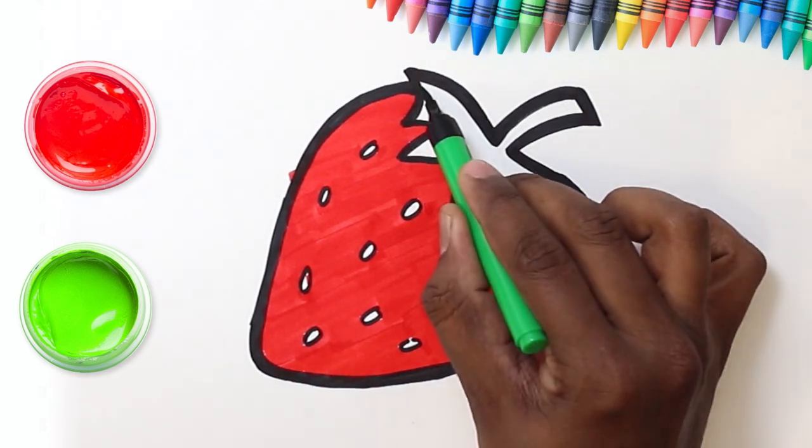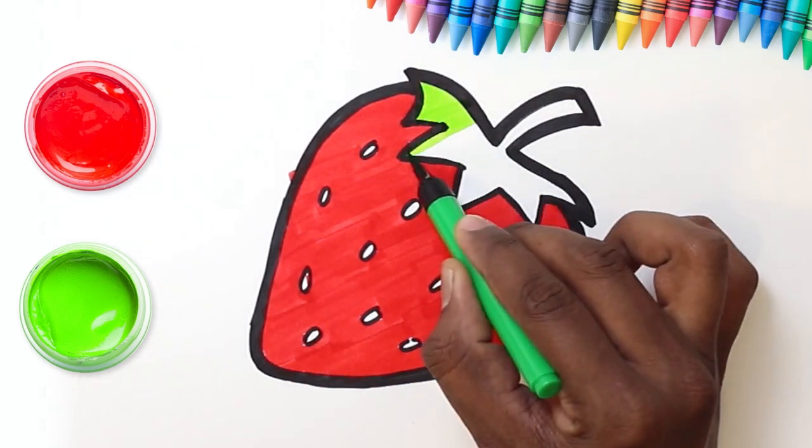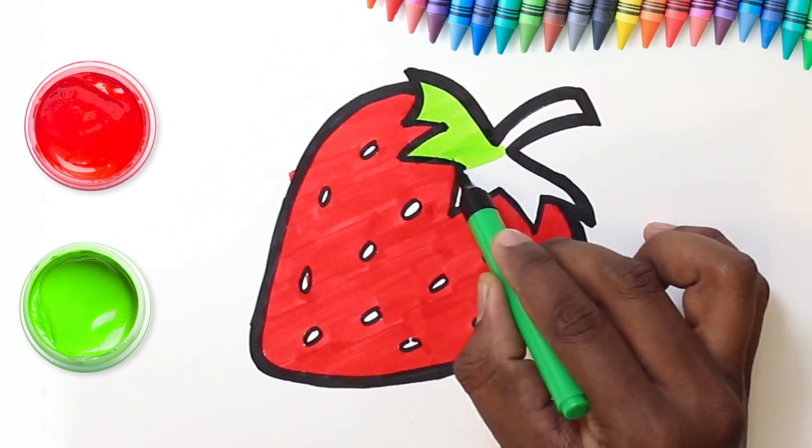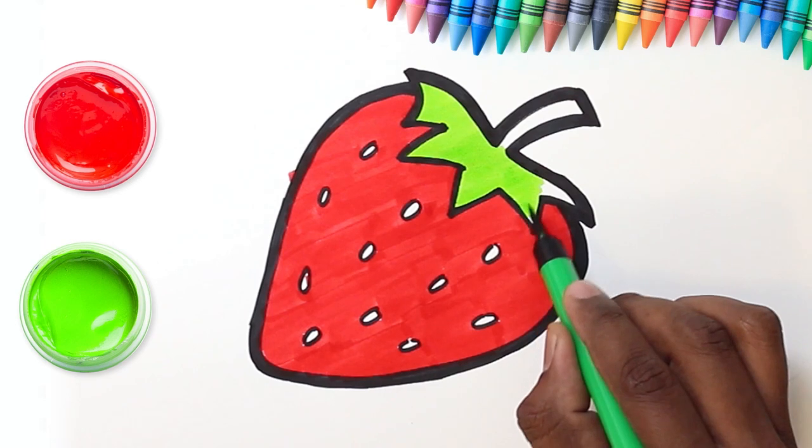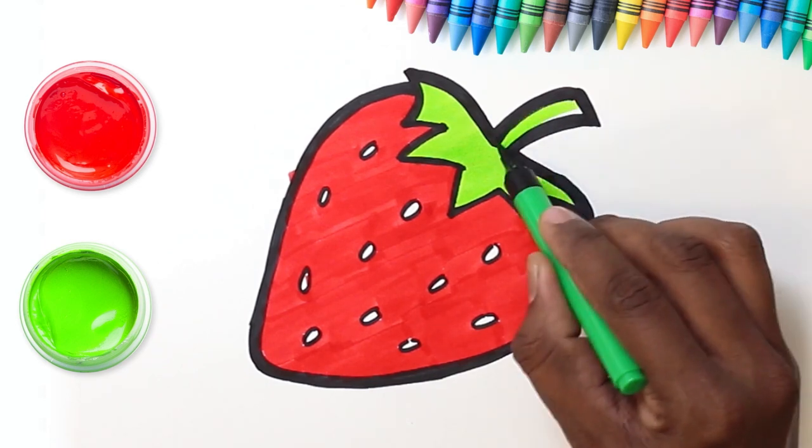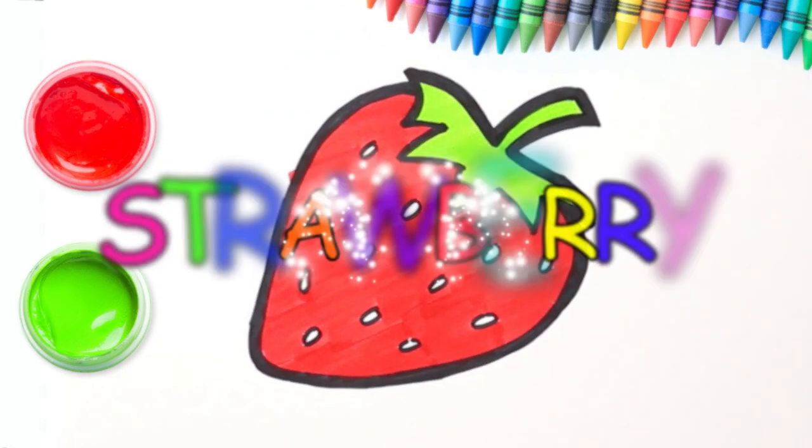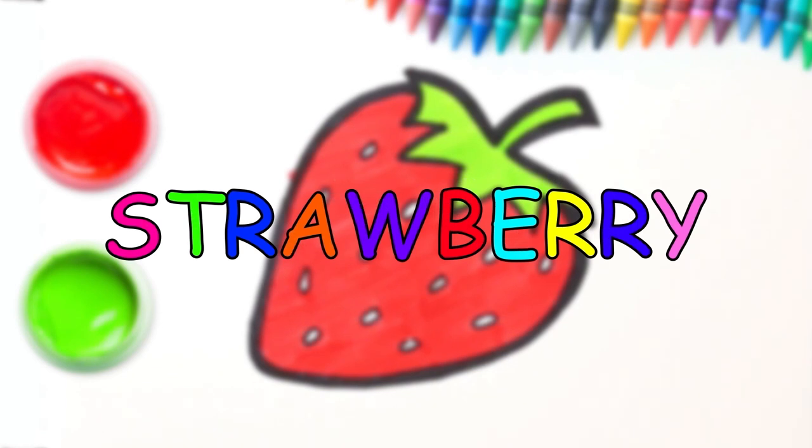And for the stem, let's go with a light green. We're almost done. And here it is. A lovely red strawberry. Hope you had fun.